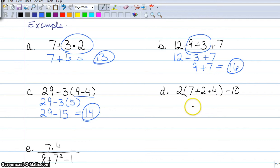Next I have 2 times 7 plus 2 times 4 minus 10. Notice inside this set of parentheses I still have to follow the order of operations. So I have 2 times 7 plus 8 minus 10. That's going to give me 15 minus 10. 2 times 15 gives me 30, so now I have 30 minus 10, and that's equal to 20.